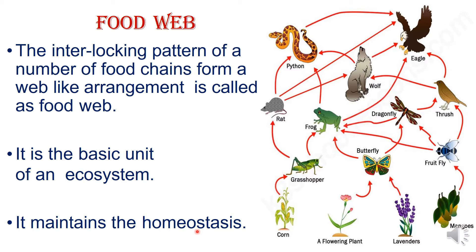The food chain includes plants as the number one thing — plants give productivity. Plants control population, and herbivores control is also maintained. That's why the food web is important in an ecosystem.